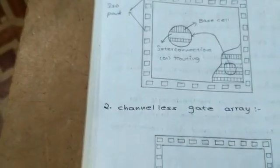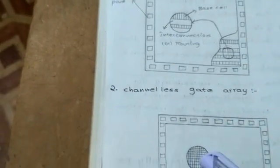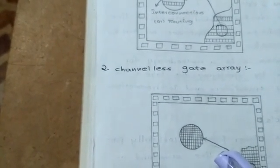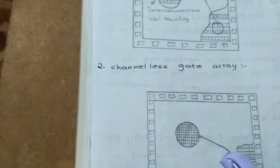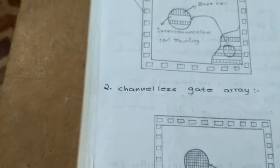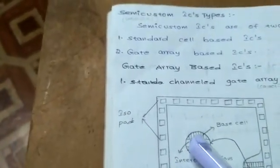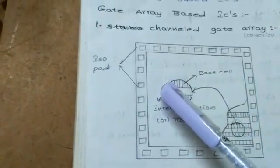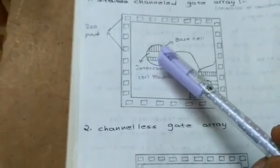The channeled gate array uses predefined spaces between the rows of base cells to implement logic from one cell to another. A channeled gate array is manufactured with single or double rows of basic cells across the silicon, where each basic cell contains a number of transistors. Manufacturing time takes two days to two weeks. The final customization process interconnects the basic cells using channels between the rows for interconnection — creating transistor functionality between one cell and another.